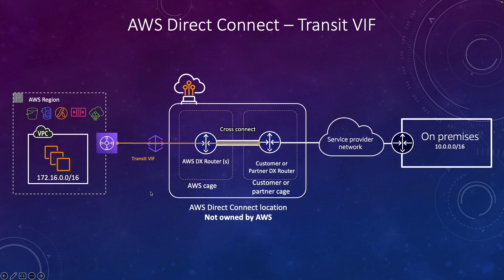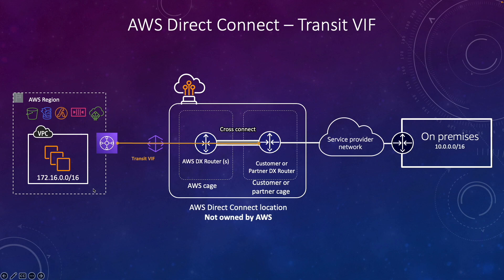Next we have Transit VIF. Transit VIF also provides connectivity to AWS resources which are running within the VPC. Now you might be thinking that we already have a private VIF for that, so why do we need Transit VIF? The problem with the private VIF is that you need a virtual private gateway which is attached to only one VPC, so with the private VIF you can connect to only one VPC. If you have 10 different VPCs then you need to create 10 different private VIFs. But with the Transit VIF you are terminating at a Transit Gateway level, and with the Transit Gateway you can have multiple VPCs attached. So with a single Transit VIF you can connect to multiple VPCs.